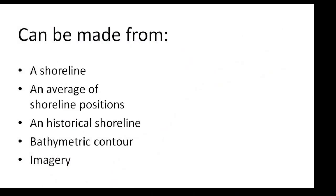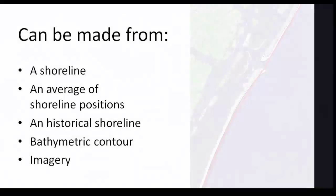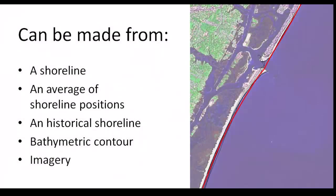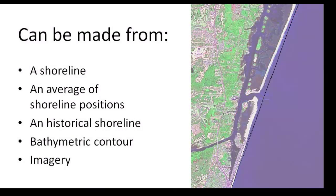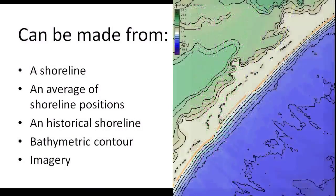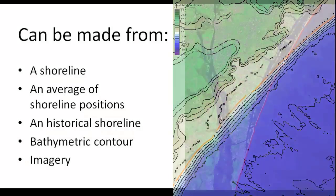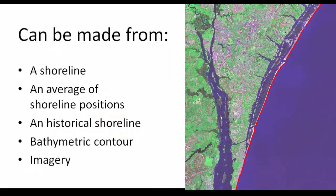The Regional Contour can be made from any or a combination of the following: one or an average of shoreline, a historical shoreline, a bathymetric contour, or imagery.